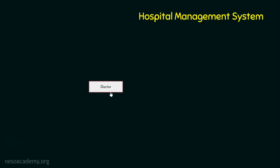Here is the doctor entity. What are the attributes of the doctor entity? The attributes are doctor ID, doctor name, and specialization. Doctor ID alone is made as the primary key attribute, whereas doctor name and specialization are normal attributes. Because there may be multiple doctors with the same name or the same specialization. In a real database, multiple important attributes need to be recorded like the doctor's qualification, experience, age, and many other fields.